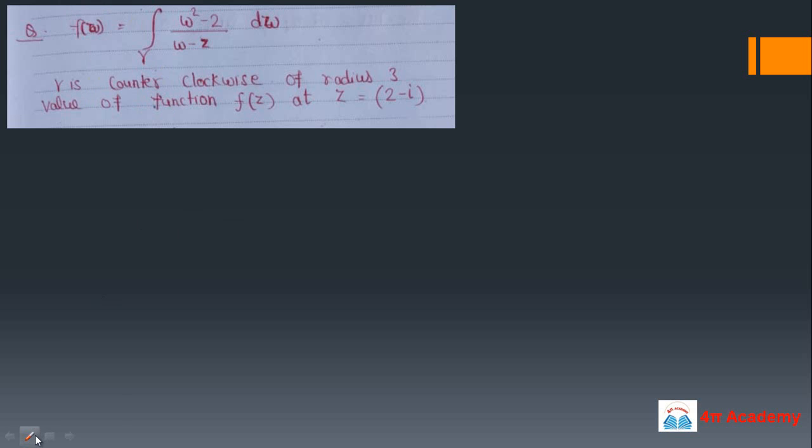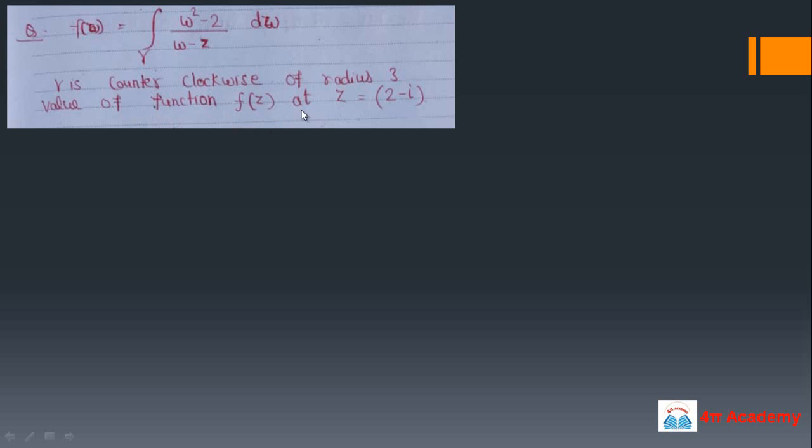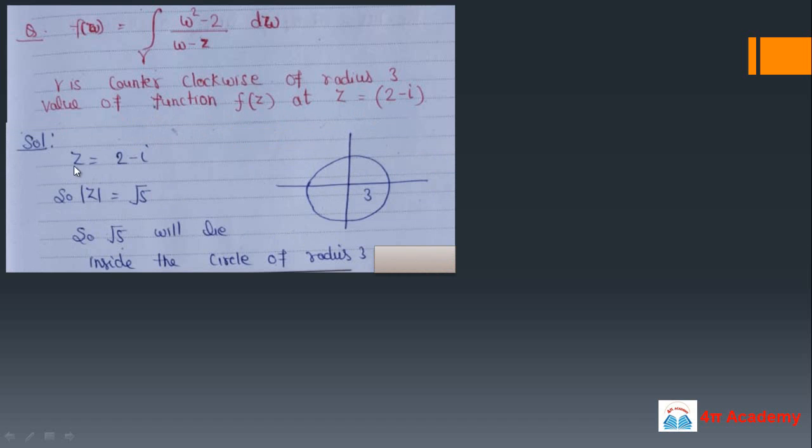The first question is a 5-mark complex analysis question. The function f(w) equals the integration of (omega squared minus 2) upon (omega minus z). Gamma is a counterclockwise contour of radius 3, and you have to find the value of the function f(z) at z equals 2 minus i.